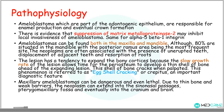This type of tumor can be found in both the maxilla and the mandible, although the majority — up to 80% of cases — are situated in the mandible, with the posterior ramus area being the most frequent site. The neoplasms are often associated with the presence of an erupted tooth, displacement of adjacent teeth, and resorption of roots. The lesion has a tendency to expand the bony cortex, because its slow growth rate allows time for the periosteum to develop a thin shell of bone ahead of the expanding lesion.